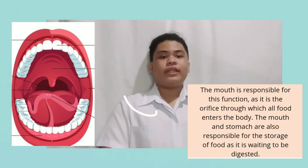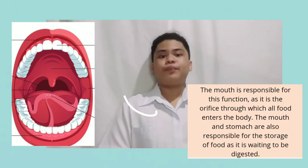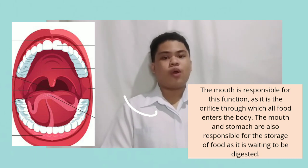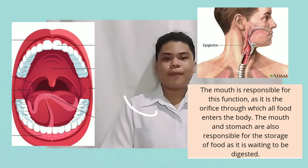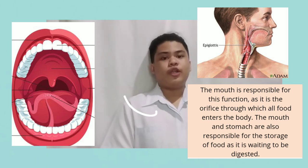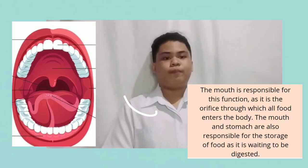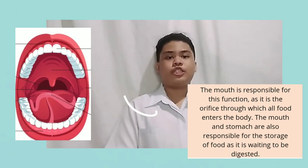The first major part of the digestive system is the mouth. Food starts to move through the GI tract when you eat. When you swallow, your tongue pushes food into your throat. A small flap of tissue called the epiglottis folds over the windpipe to prevent choking, and food passes into your esophagus.